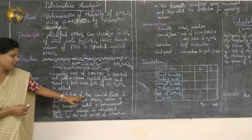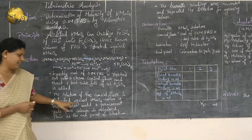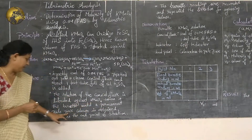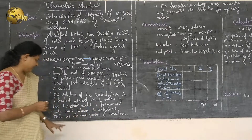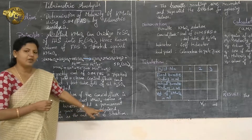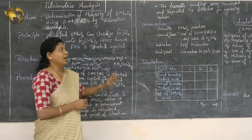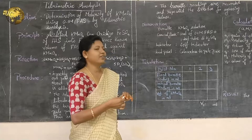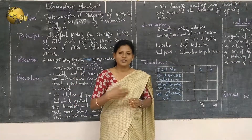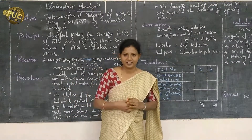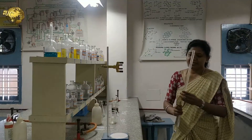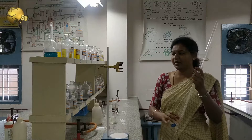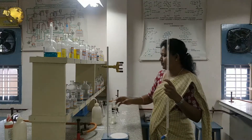The solution in the conical flask is then titrated against potassium permanganate taken in the burette. This is the burette, and this is the burette stand. Before using the burette, first we have to rinse it with distilled water.